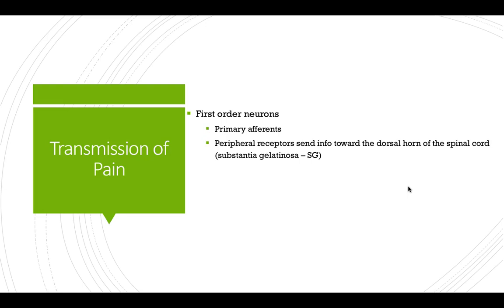When we talk about transmission of pain, first order neurons are right there at the beginning. They're going to synapse with the receptors — specifically the nociceptors — and they are the primary afferent sensory nerves. They take the signal created from the receptor and transmit it toward the spinal cord, specifically to the dorsal horn and an area known as the substantia gelatinosa, or the SG.